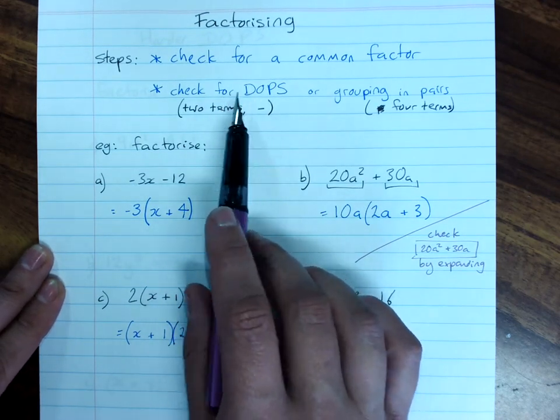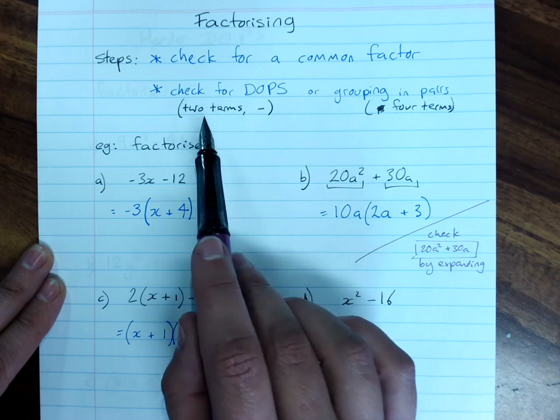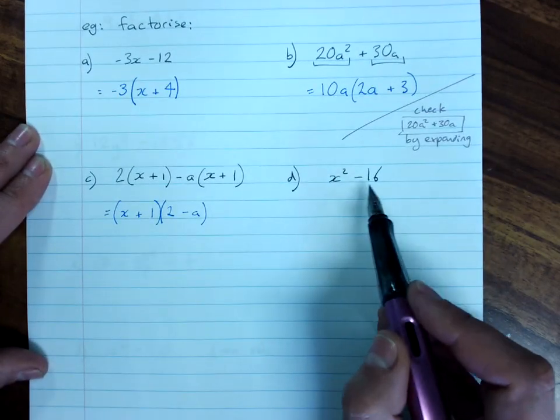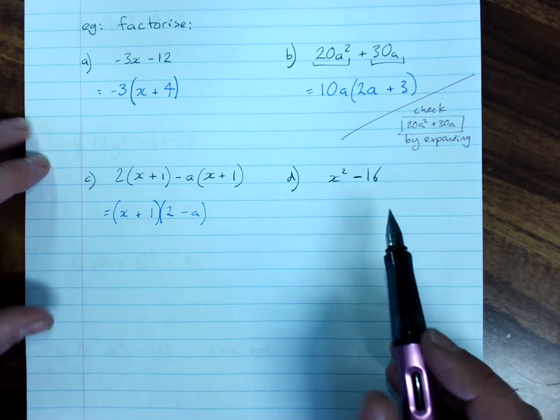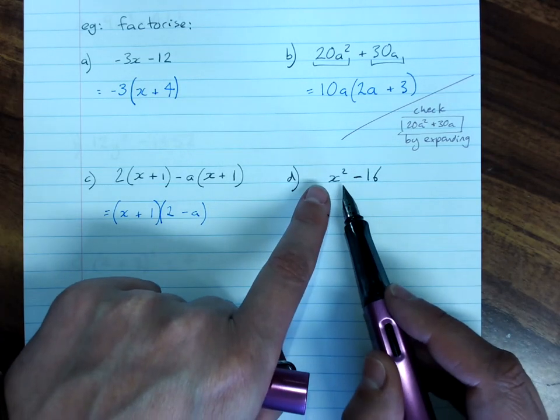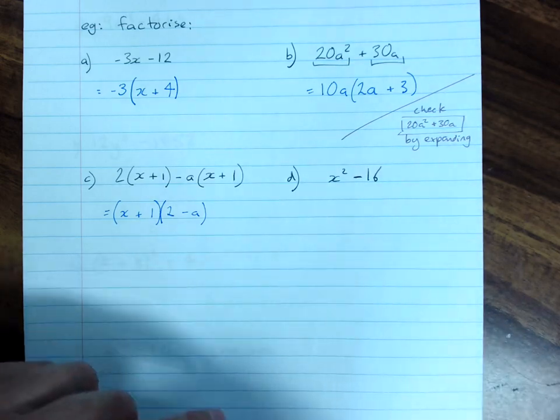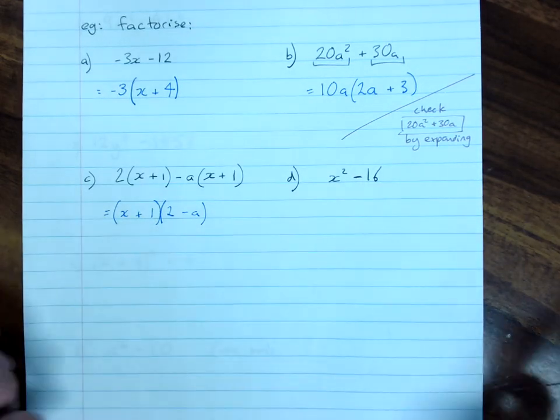So, because we know that a difference of perfect squares ends up as two squares, and it's the difference of them, subtraction, we can recognize that because I've got a square minus a square, that this is a difference of perfect squares.